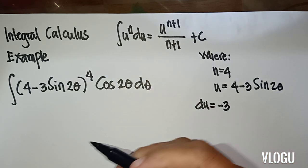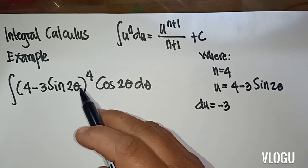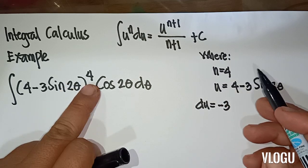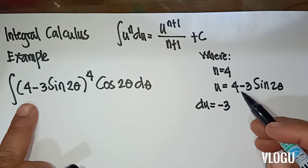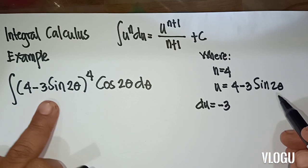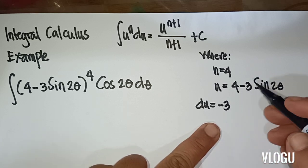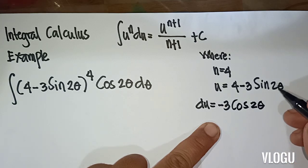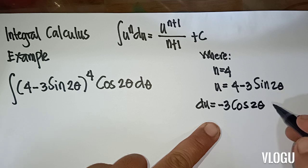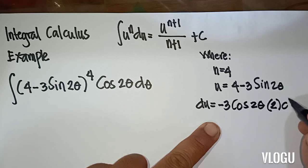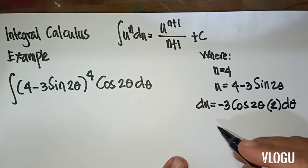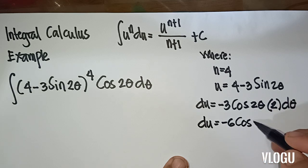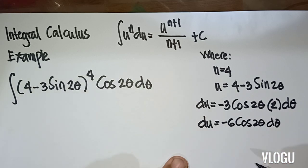Example: the integral of (4 minus 3 sine 2 theta) to the 4, cosine 2 theta d theta. In our given, n is equal to 4, u is equal to 4 minus 3 sine 2 theta. The derivative of u is equal to negative 3 cosine 2 theta, times the derivative of 2 theta, which is 2 d theta.